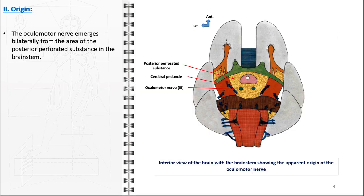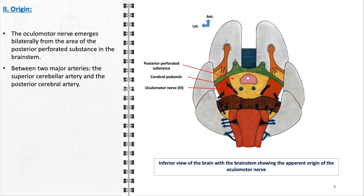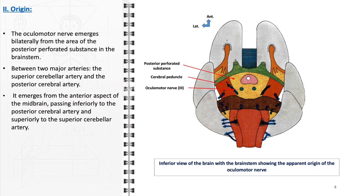The oculomotor nerve emerges bilaterally from a specific region in the brainstem known as the posterior perforated substance, situated at the base of the brainstem. This area is nestled between the superior cerebellar artery and the posterior cerebral artery, two vital blood vessels supplying the brain. The positioning of the oculomotor nerve in relation to these arteries is of particular clinical importance. As the oculomotor nerve exits the brainstem, it moves inferiorly relative to the posterior cerebral artery and superiorly to the superior cerebellar artery.